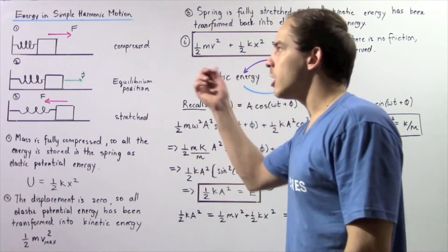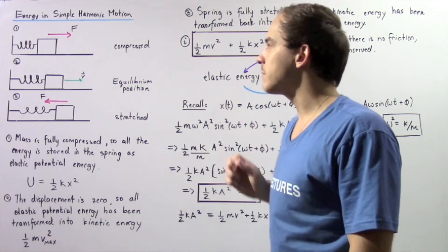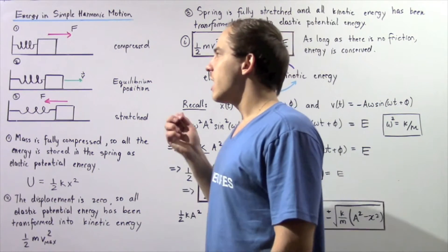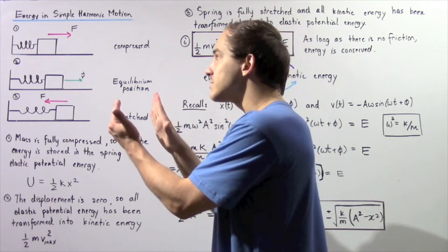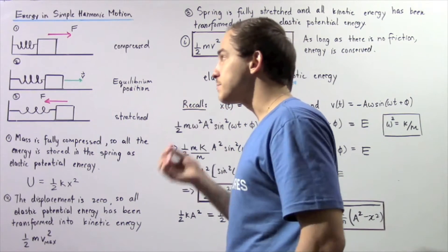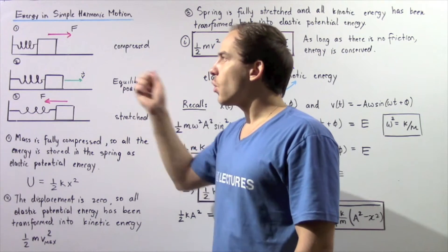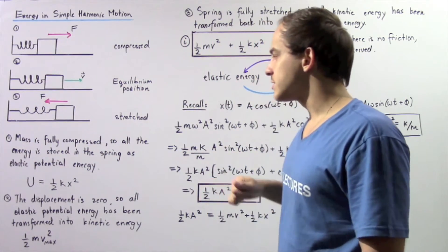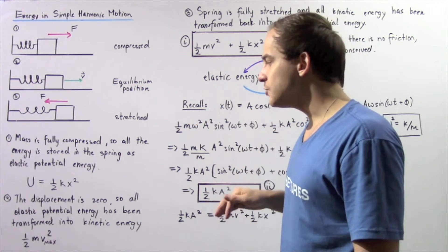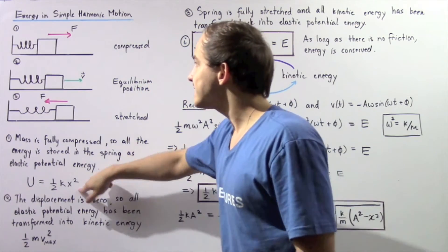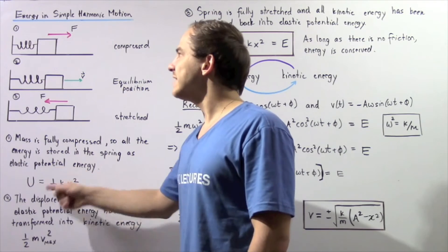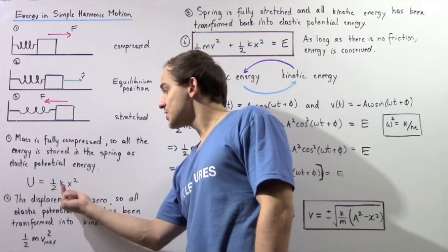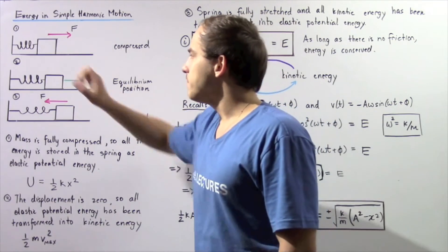Let's talk about the energies in diagrams 1, 2, and 3. Initially in diagram 1, the object has no velocity and therefore no kinetic energy, but the spring is compressed. A nonzero displacement means energy is stored in the spring as elastic potential energy. In diagram 1, the mass is fully compressed, so all the energy is stored as elastic potential energy, given by one-half k times x squared, where x is our amplitude.